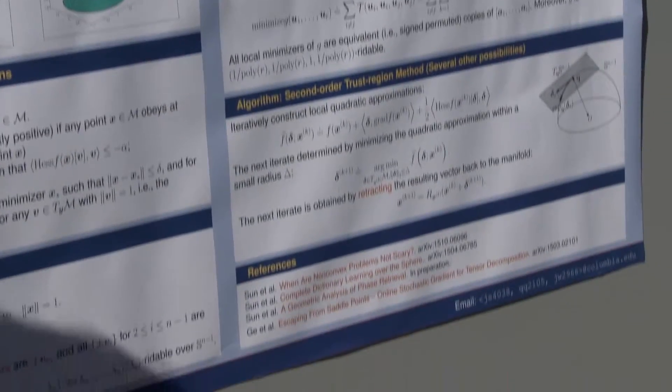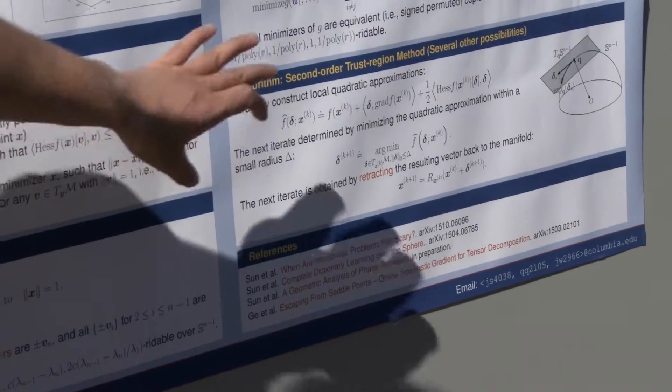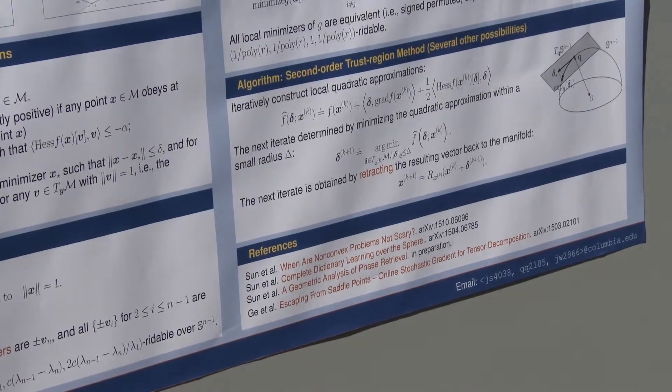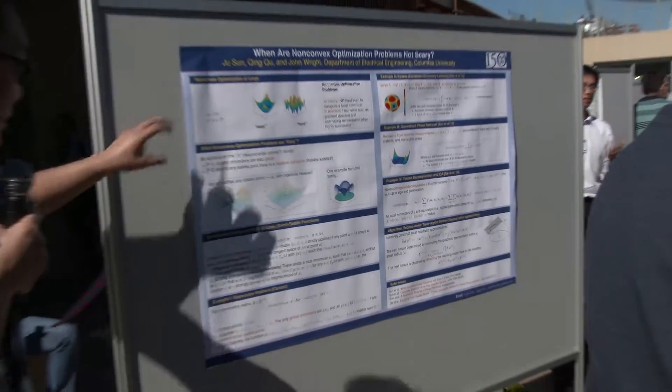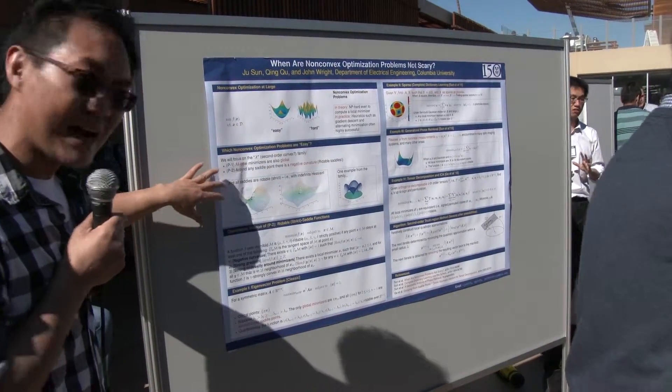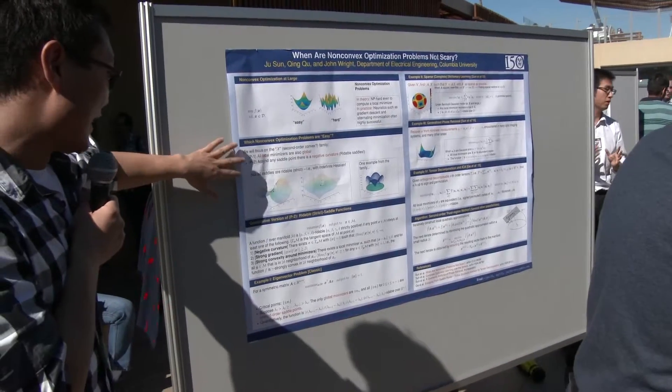By working out several practical examples, we identify a kind of very nice structure for non-convex problems. Before we go to the examples, I just want to highlight the structures. It's actually very simple.